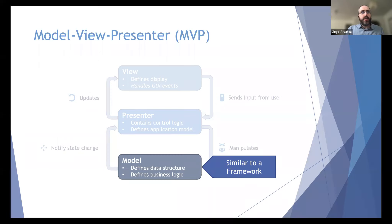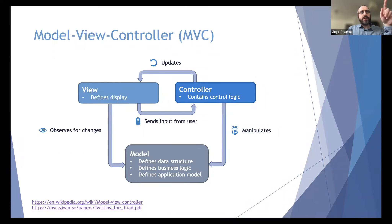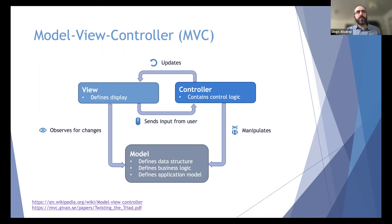Going back to MVC — the 'observe for changes' link between the view and the model is often implemented using another architectural pattern called the observer pattern. It's very useful in general, not specific to GUIs. It allows part of your code to check for changes in another part of the code without that second part being aware it's being observed. It's easy to implement in different languages. So in total you have four patterns to learn: layer pattern, model-view-controller, model-view-presenter, and observer pattern.